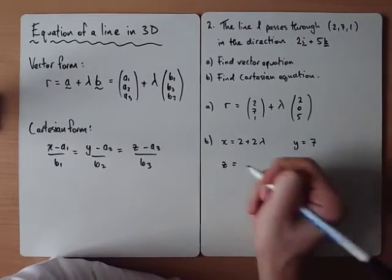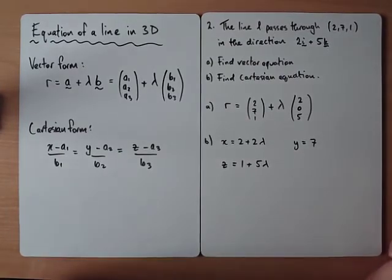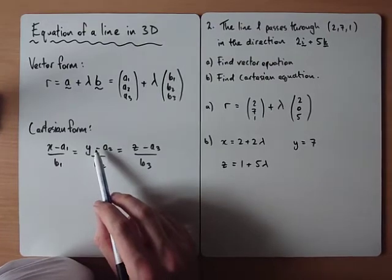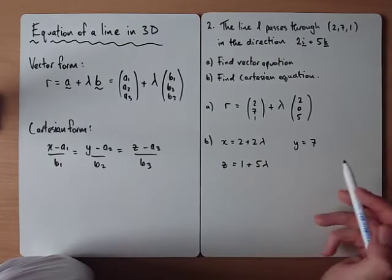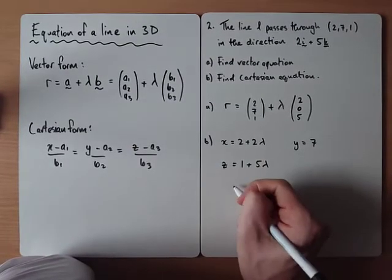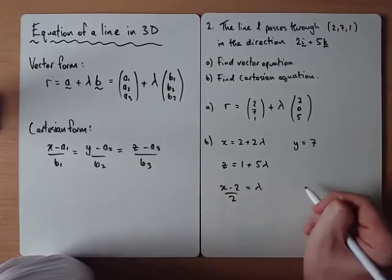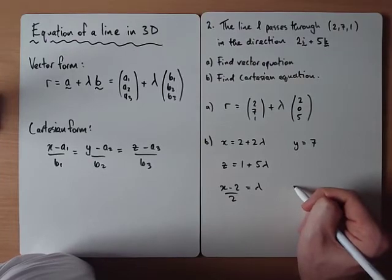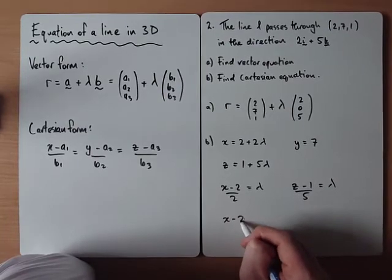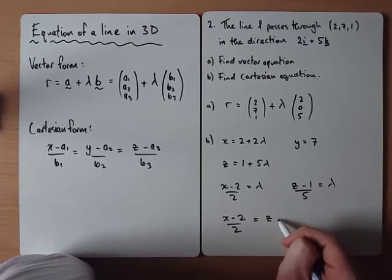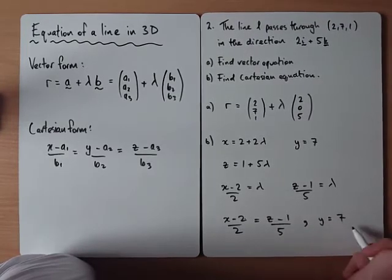And z would equal 1 plus 5 lambda. So when we are doing this, don't write it as y minus 7 divided by 0. Don't write that. You just say y is equal to 7. So from that equation, we'd get x minus 2 divided by 2 equals lambda. And we'd get z minus 1 divided by 5 equals lambda. So the Cartesian equation would be x minus 2 over 2 would equal z minus 1 over 5, comma, y would equal 7.